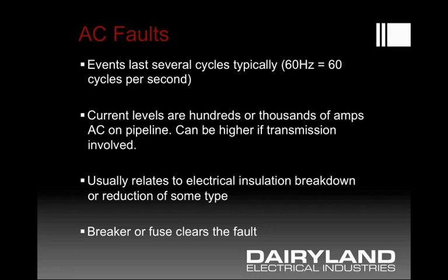An AC fault is something that will typically last several cycles. The level it reaches could be hundreds or thousands of amps, or even tens of thousands of amps. What the pipeline actually sees is generally less than that number — unless there was some direct bond between a transmission line grounding system and a pipeline, in which case values could be much higher. A direct bond would represent the worst case condition. An electrical fault occurs when there's some kind of insulation breakdown, an arc occurs, and current flows for the time duration until a breaker clears the fault. Usually that's several cycles of a 60 Hz or 50 Hz waveform — a relatively fast event, but still much longer than a lightning event.